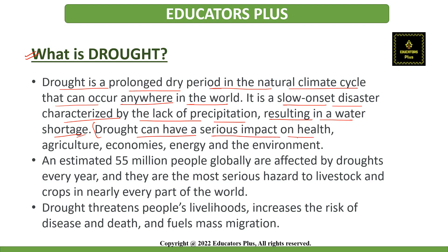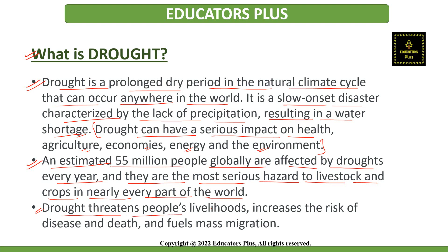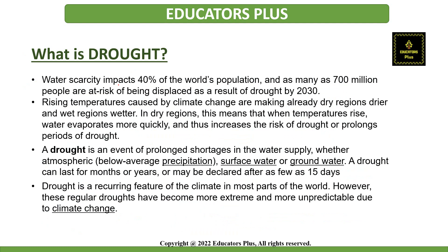Drought can have a serious impact on health, agriculture, economies, energy, and our environment. It is estimated that 55 million people globally are affected by droughts every year, and they are the most serious hazard to livestock and crops in nearly every part of the world. Droughts affect the basic livelihoods of people, increasing the risk of diseases and death, and they fuel mass migration. Water scarcity impacts around 40% of the world's population, and as many as 700 million people are at risk of being displaced as a result of drought by the year 2030.